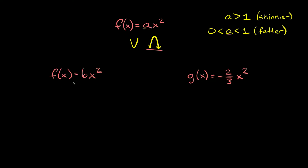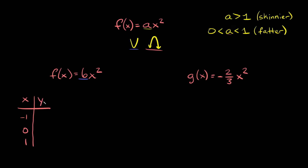Let's start with f(x) = 6x². Our a value is a positive 6. It's positive, so we should expect it to open up. And it's bigger than 1, so we should expect it to be kind of skinny. In order to graph this, all we need to do is make a little XY table, and some easier numbers to plug in for x are going to be negative 1, 0, and 1. We can also label the y-column as f(x).